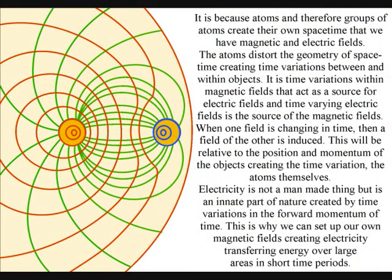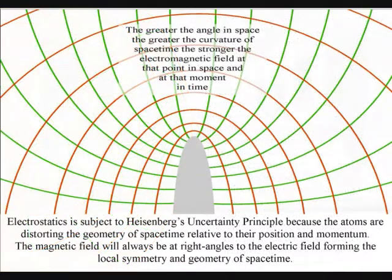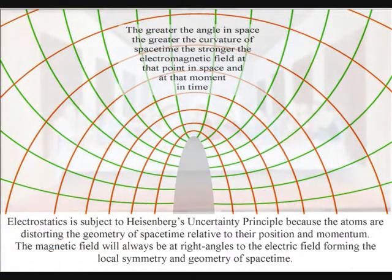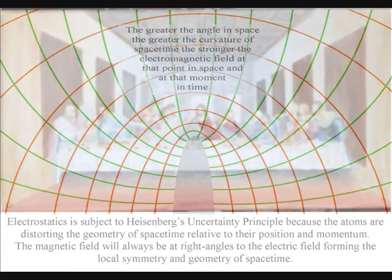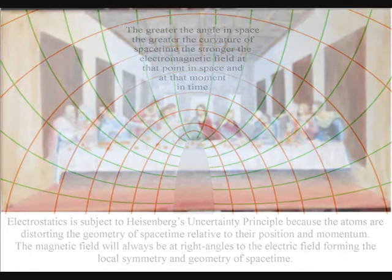A time-varying electric field acts as a source of a magnetic field, and a time-varying magnetic field is the source of electric fields. When either field is changing in time, then a field of the other is induced. This will be relative to the position and momentum of the objects creating the time variation, the atoms themselves.